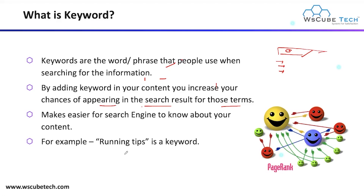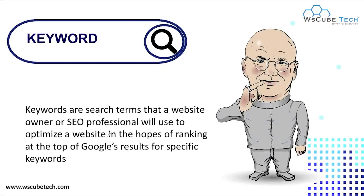Keywords are the search terms that a website owner or SEO professional will use to optimize a website, in the hope of ranking at the top of Google search results for specific keywords. Users enter a particular phrase into the search engine to find information, and corresponding to that keyword they get many results on the search page. SEO professionals and website owners use those keywords just to rank their website in Google search engine results.